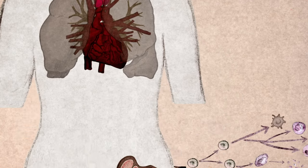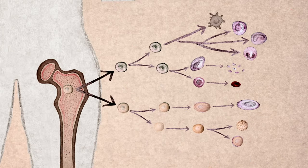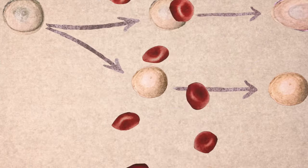Immature blood cells made from blood stem cells in the bone marrow travel through the bloodstream to the thymus.